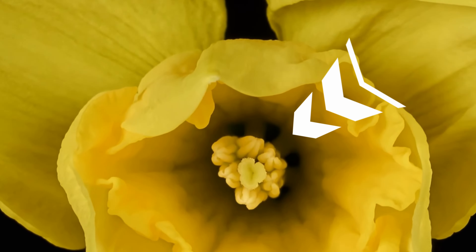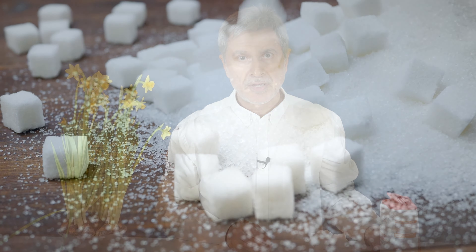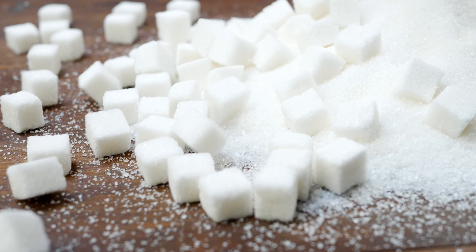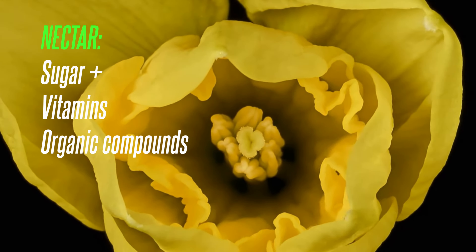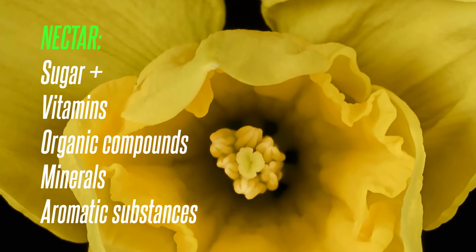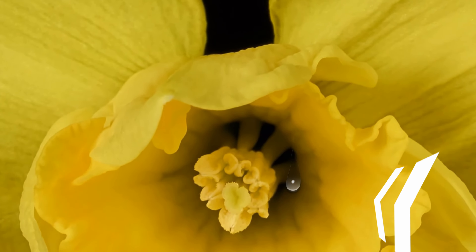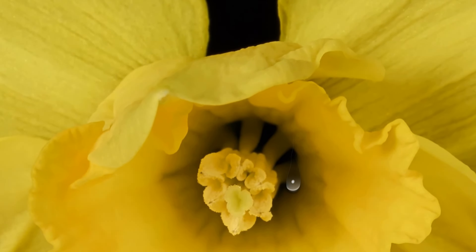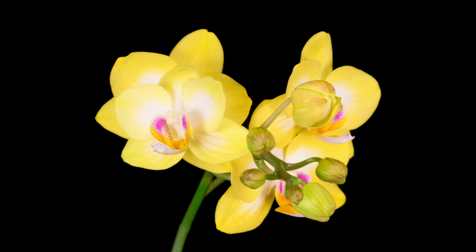There is a sugar factory right there by these flowers — nectar is produced. The white sugar or granulated sugar we use comes from sugar cane or sugar beet. It has many calories but does not contain minerals and vitamins. Nectar, however, contains sugar, vitamins, organic compounds, minerals, and aromatic substances. It is produced like a drop of water just below the flowers. Every flower on earth has one such nectar factory.